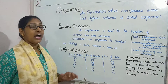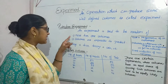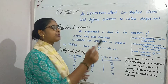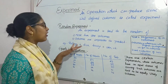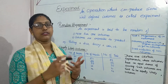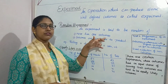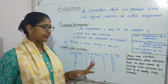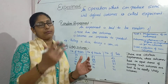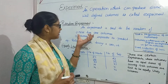Next is random experiment. An experiment is said to be random if it follows two conditions. First, more than one outcome, and second, outcomes are impossible to predict. For example, when we are rolling a dice, our result is either 1, 2, 3, 4, 5 or 6. So here there are more than one outcome. Second, outcomes are impossible to predict — we can't say that 2 is coming or 3 is coming. So it is said to be a random experiment.